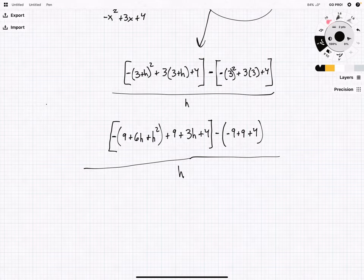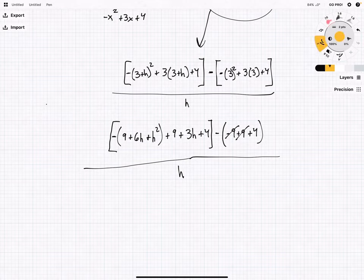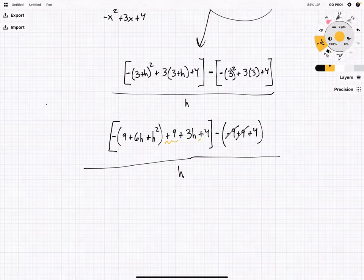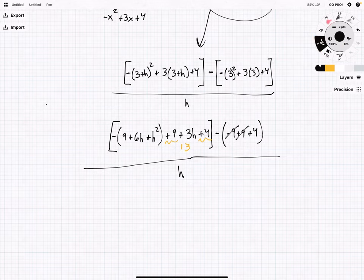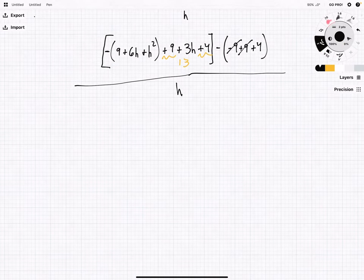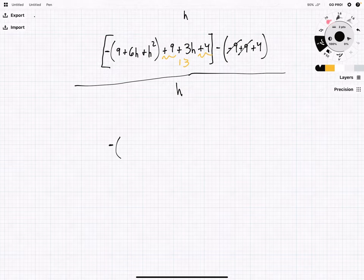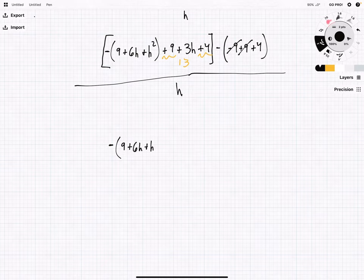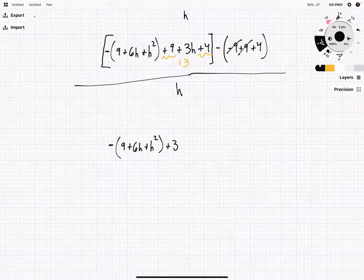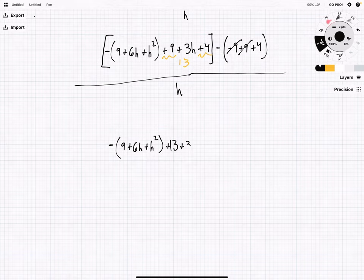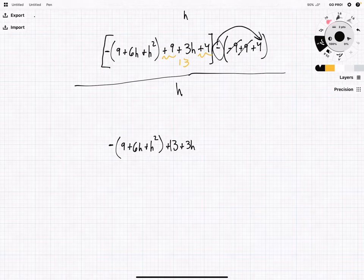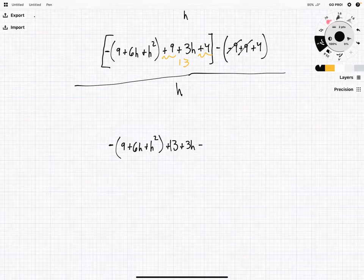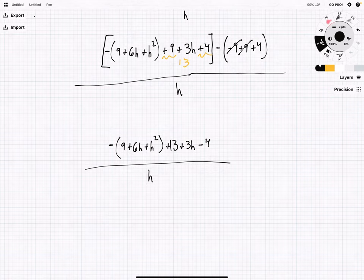Now, let's see if there's any kind of cleaning up we can do right now. Here, I see a negative 9 and a positive 9. So, that's good. And here, I see a 9 and I see a 4. So, that will become 13 in our next line. So, let's just do that a little bit at a time. That way, it's not overwhelming. So, now we have negative 9 plus 6h plus h squared plus 13 plus 3h. And this is minus 4 all over h.